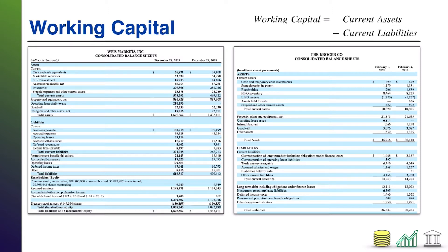Here we have the balance sheets of Weiss Markets and Kroger, both in the grocer industry. We're going to pull the current assets and current liabilities from both companies. Weiss Markets' current assets are 508,292 and their current liabilities are 291,938. For Kroger, we have current assets of 10,890 — don't let the scaling throw you off, Kroger's numbers are in millions and Weiss's numbers are in thousands — and current liabilities of 14,243.